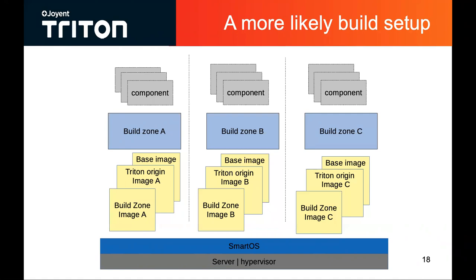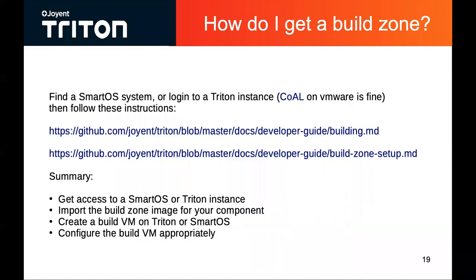You can run all of those build zones on a single SmartOS instance — you don't need to have multiple machines. To get a build zone, I'll refer you back to the documentation. You can run them on a SmartOS instance or use CoaL, which is our Cloud on a Laptop — a pre-canned VMware image that you can boot up on a laptop to come up with a Triton instance and install virtual machines on top of that. Effectively you import your build zone, create a VM, and configure the build VM appropriately. There's not much additional configuration needed if you've taken one of these pre-canned build zones, but the build itself will check for that.